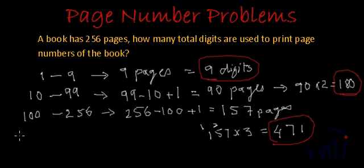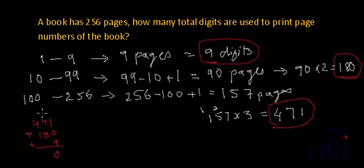So the total digits required will be the sum of all this. So that will be 471, 180, and plus 9. 9 plus 1 is 0, 1 carry forward, 7 plus 1 is 8 plus 8 is 16, 1 will be carried forward, 1 plus 4 is 5 plus 1 is 6.